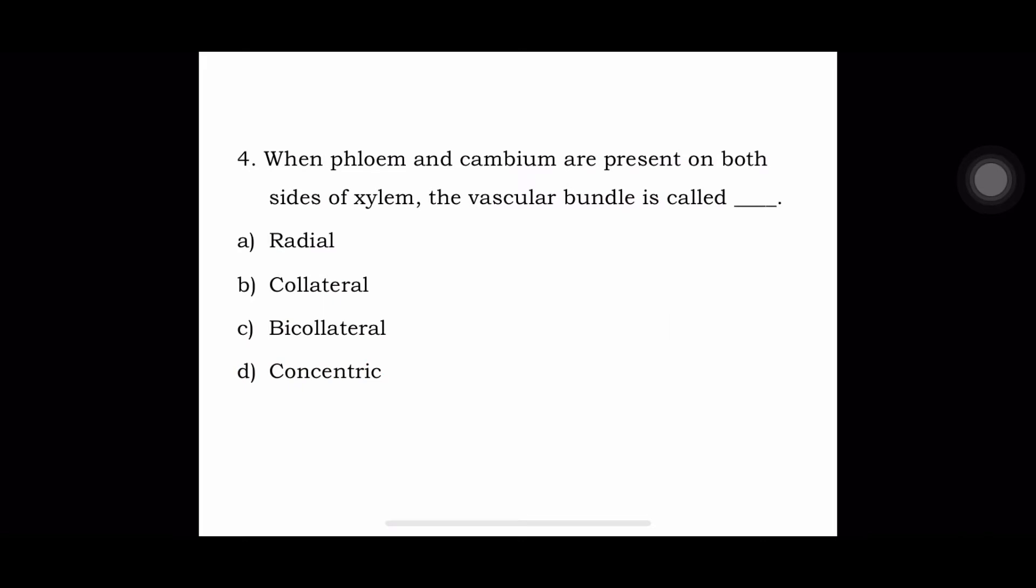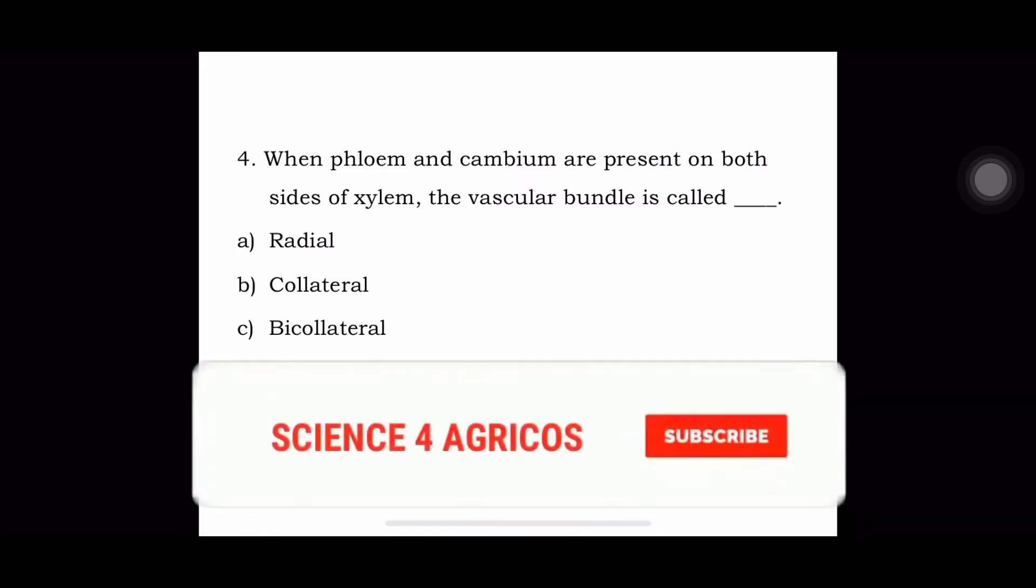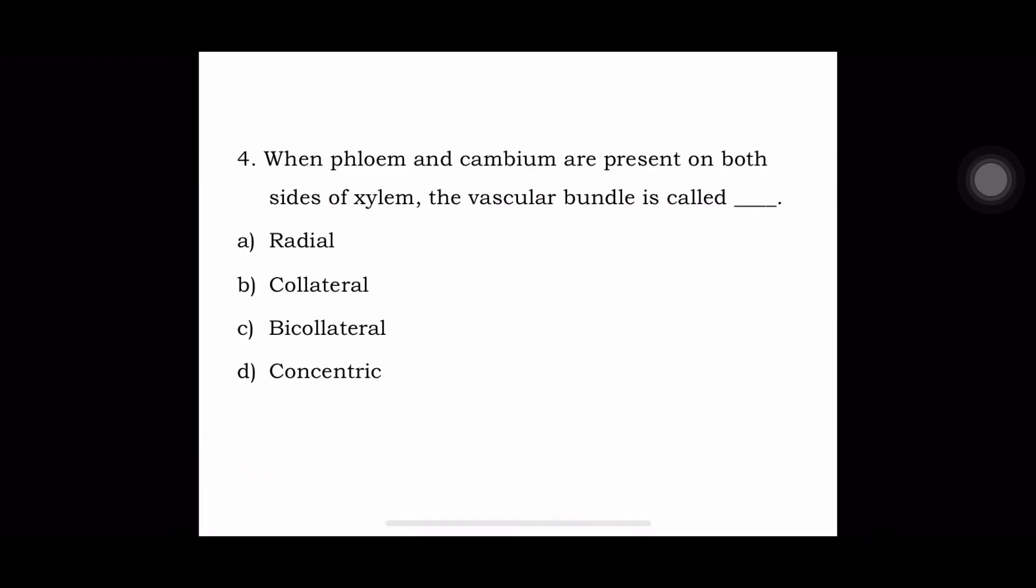Next question: When phloem and cambium are present on both sides of xylem, the vascular bundle is called a) radial, b) collateral, c) bicollateral, or d) concentric. The answer is bicollateral.